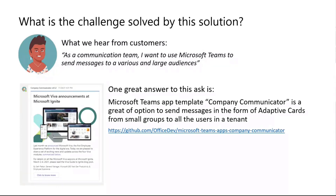One solution we advocate very much because it's convenient and useful is called Company Communicator — an open source project available on GitHub. Basically, this solution lets someone like Marta from the communication team send a communication to a group of people in Teams. She has an interface to prepare the message, provide the title, an image, some links, and some content. This gets sent to the audience in the form of an Adaptive Card. And since it's open source, you can refactor this card with any content you like — no limitation there.